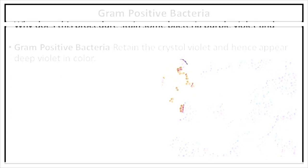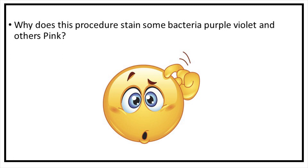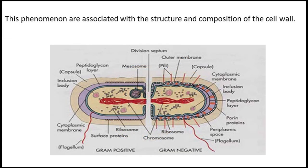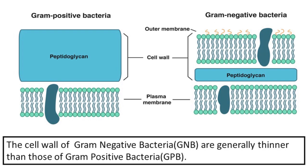Why does this procedure stain some bacteria purple-violet and others red? The most plausible explanation for this phenomenon is associated with the structure and composition of the cell wall. Differences in the thickness of cell walls between these two groups may be important. The cell wall of Gram negative bacteria is generally thinner than that of Gram positive bacteria.